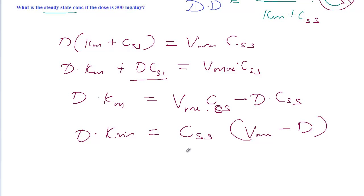All we need is concentration at steady state. So let's rewrite this equation again. Concentration at steady state equals dose times Km, which is constant, divided by Vmax minus D, the daily dose.